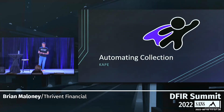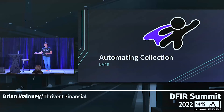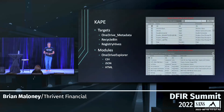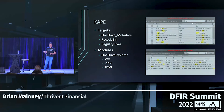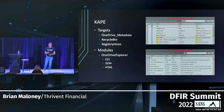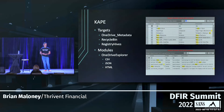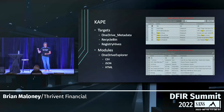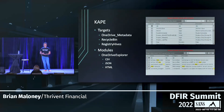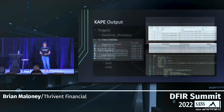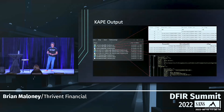So automation — how do we go about automating this without having to do multiple collections, parse the data, and then go back and pull in what we need? With CAPE, all we need to do is grab the OneDrive metadata, the recycling bin, and the registry hives. On the module side, they built out support for the command line version of OneDrive Explorer, which can output CSVs, JSONs, and HTMLs. After running this data, this is just an example of the output that we have.